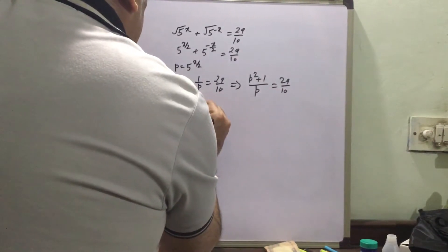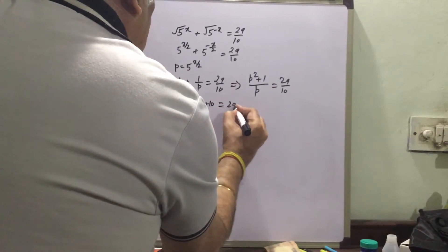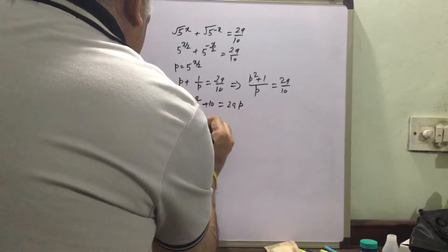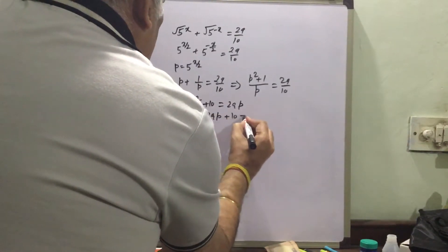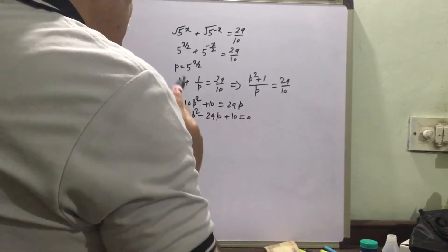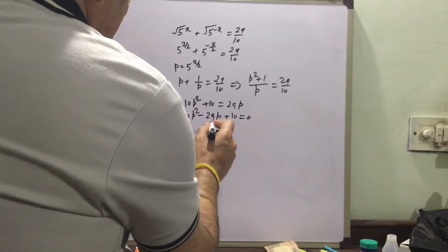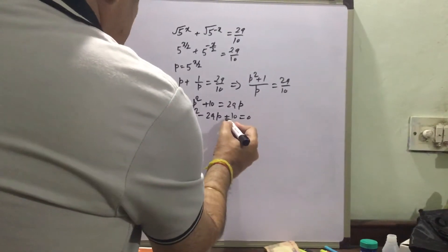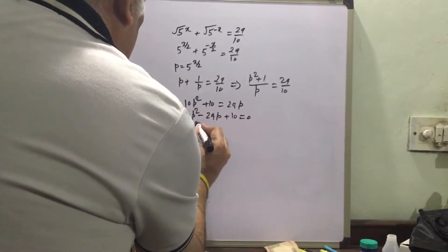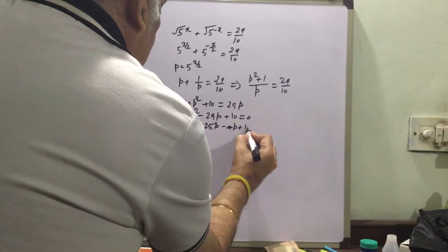Cross multiplying, we get 10p squared plus 10 equal to 29p. Or we can write this as 10p squared minus 29p plus 10 equal to 0. Now, 10 multiplied by 10 is 100, so we have to find factors of 100 such that their sum is 29. Such factors are 25 and 4. So we write: 10p squared minus 25p minus 4p plus 10 equal to 0.